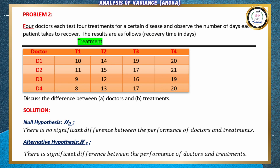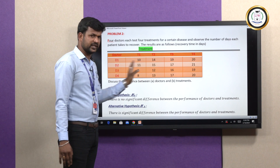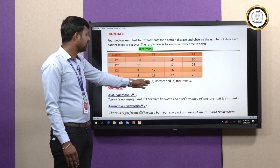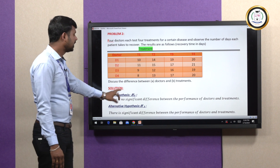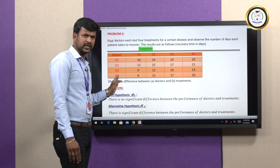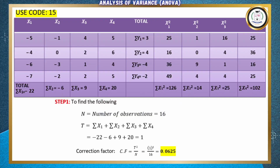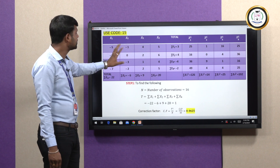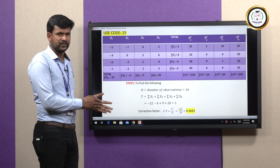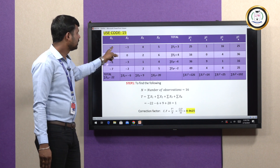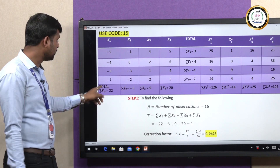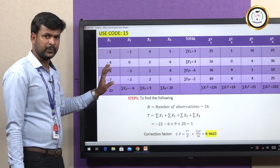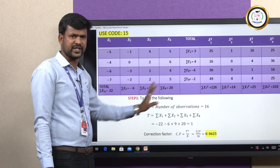Let us go to the problem directly. This is data given for a hospital — treatment and number of doctors. We need to check the difference between the doctors and treatments. The null hypothesis: there is no significant difference between treatment and doctors. Alternative hypothesis: there is a significant difference. Here we are going to use the code 15 to reduce the values for our convenience — we subtract 15 from each data. After subtracting, the summation values for summation x1, x2, x3, and x4 are found — here we have four columns.